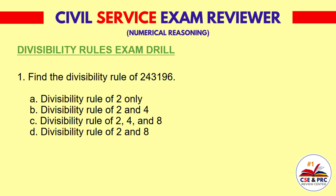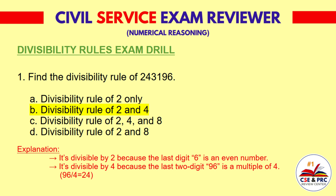Let's practice. Question 1: Find the divisibility rule of 243,196. A. Divisibility rule of 2 only. B. Divisibility rule of 2 and 4. C. Divisibility rule of 2, 4, and 8. D. Divisibility rule of 2 and 8. The answer is B: divisibility rule of 2 and 4. It's divisible by 2 because the last digit 6 is an even number. It's divisible by 4 because the last two digits 96 are a multiple of 4. 96 divided by 4 equals 24.